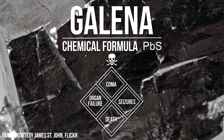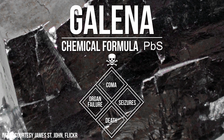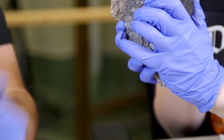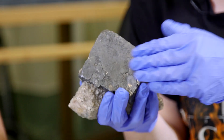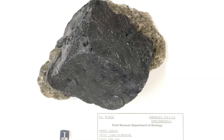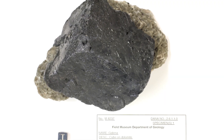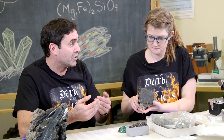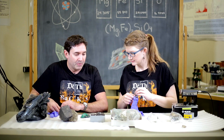Next up, we have galena. So Jim, what makes galena harmful? Well, it's an ore of lead. You'll hear about people getting lead poisoning from lead paint and so forth. And if it gets into your body or bloodstream, it can build up over time and cause organ failure, seizures, coma, and death if exposed to enough of it.